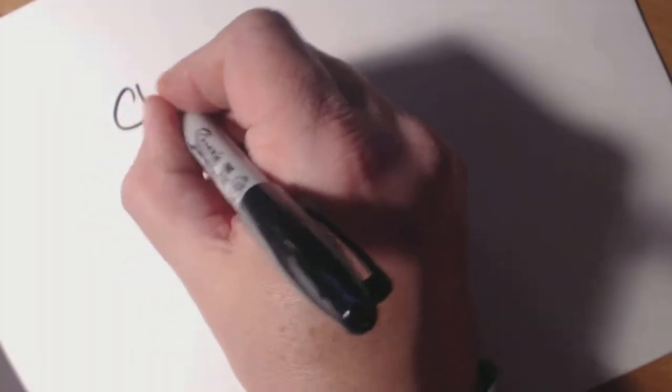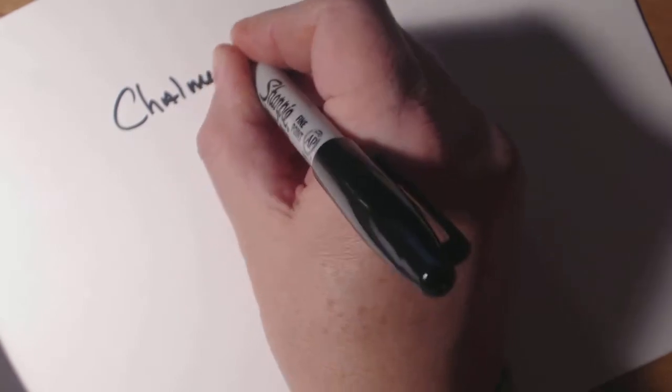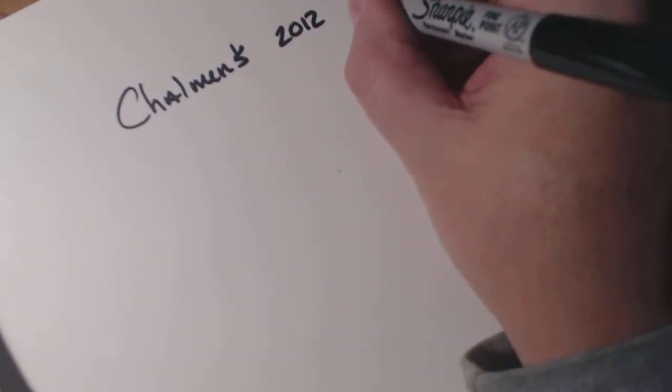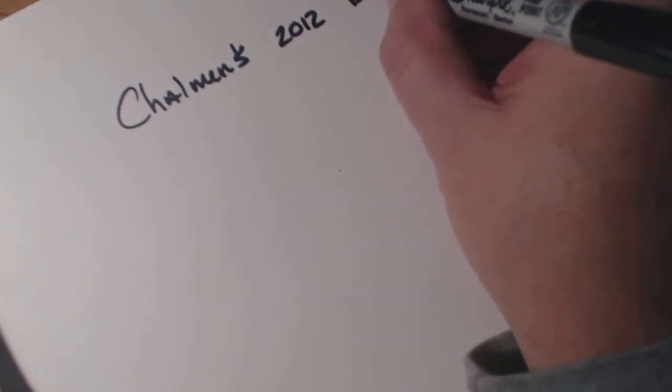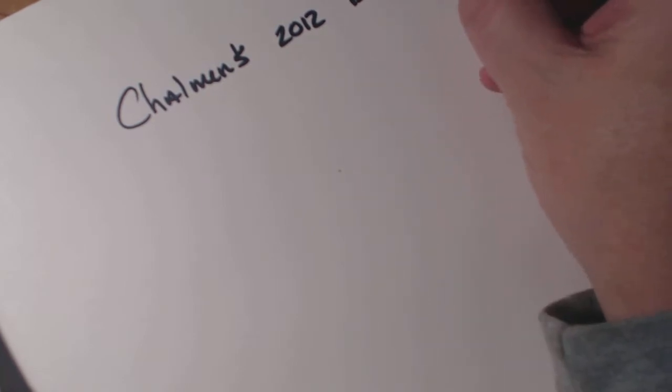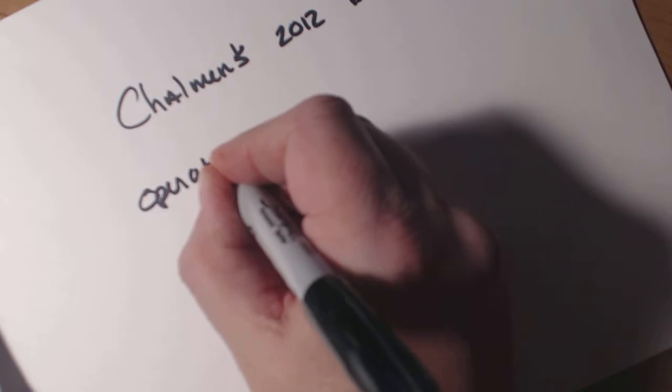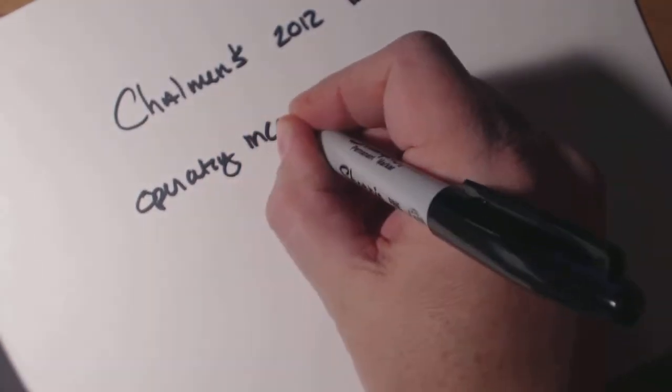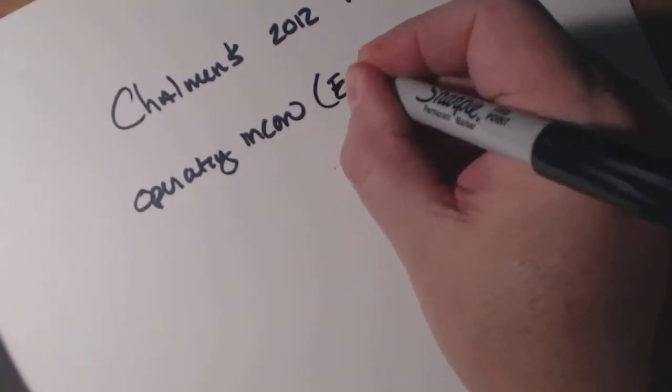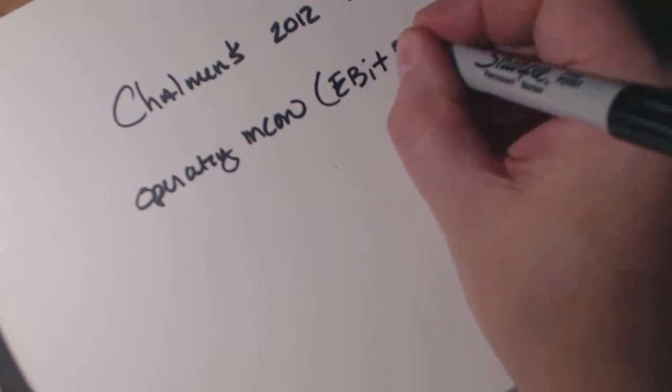I'd like to introduce to you a company called Chalmers. Chalmers in 2012 had a reported income, this would be operating income, operating income of $750,000.